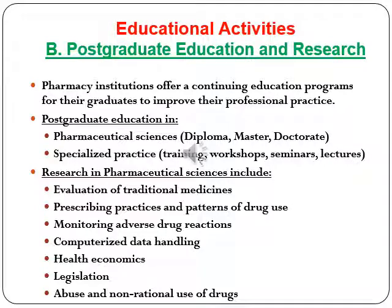Finally, postgraduate education and research: pharmacy institutions offer continuing education programs for their graduates to improve professional practice, such as diploma, master, and PhD degrees in pharmaceutical science, as well as training workshops, seminars, and lectures. Research in pharmaceutical science includes evaluation of traditional medicine, prescribing practice, monitoring of adverse drug reactions, data handling, health economics, legislation, and the study of drug abuse and non-rational use of drugs.